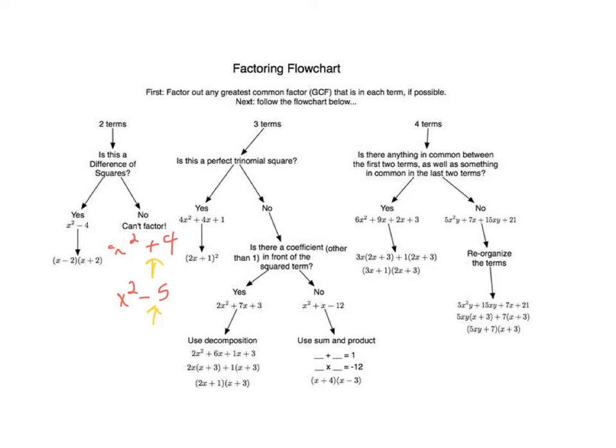If your polynomial has three terms, you have a few different choices. First, if you can successfully identify a trinomial as a perfect trinomial square, you can use the quick trick we discussed.